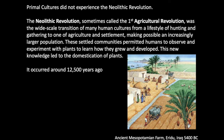Primal cultures did not experience the Neolithic Revolution — sometimes called the first agricultural revolution — which was the wide-scale transition of many human cultures from hunting and gathering to agriculture and settlement, making possible increasingly large populations. These settled communities permitted humans to observe and experiment with plants, leading to the domestication of plants. It occurred about 12,500 years ago. Primal cultures still often farm, but not on the level that would allow them to create large-scale societies focused in one spot, like a city or large settlement.